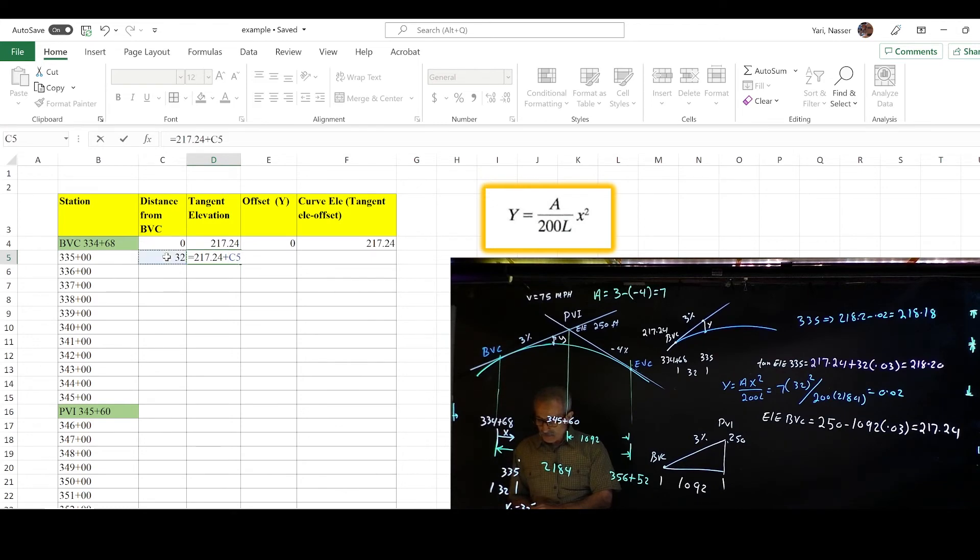Plus, now you can go ahead and click next cell, which is 32 feet, and it should be C5, multiply by 0.03, and enter. And there's your grade, tangent grade, which we came up with, 218.20.